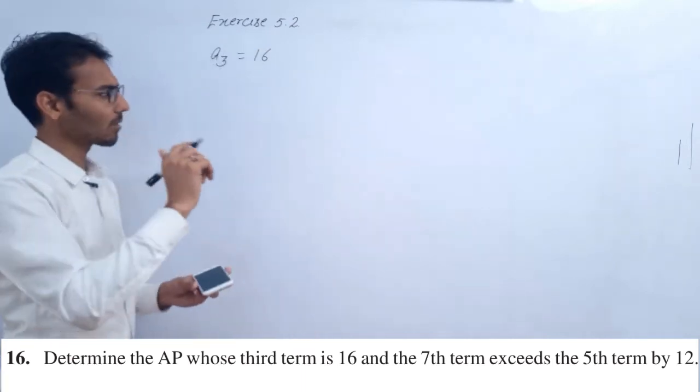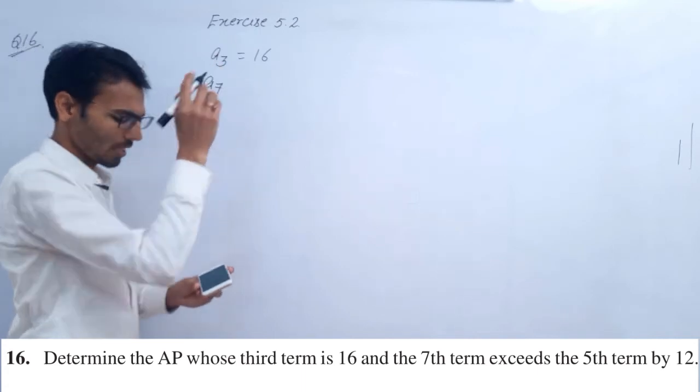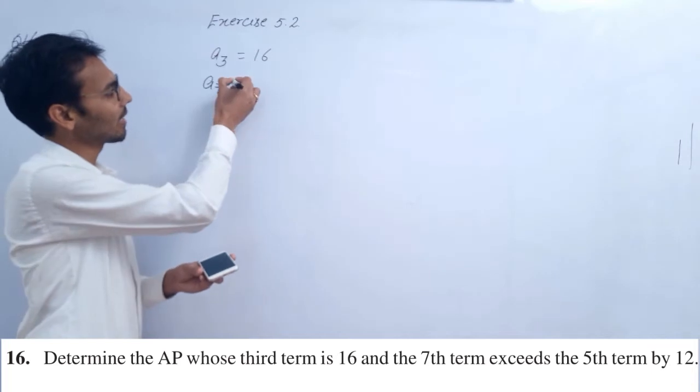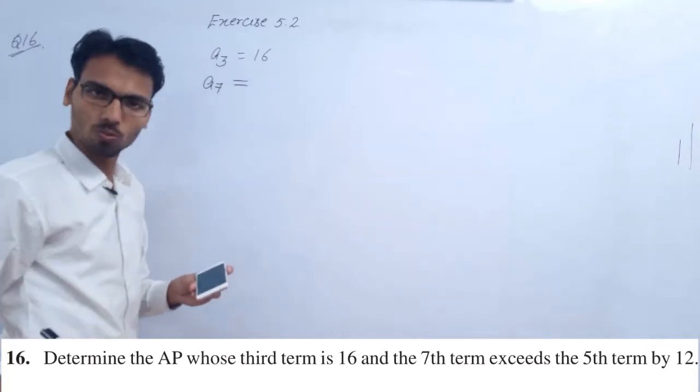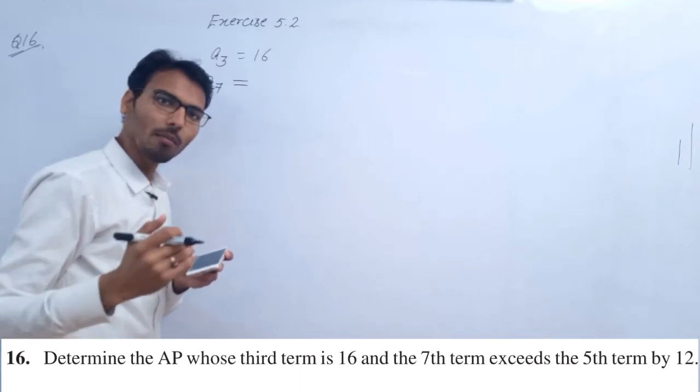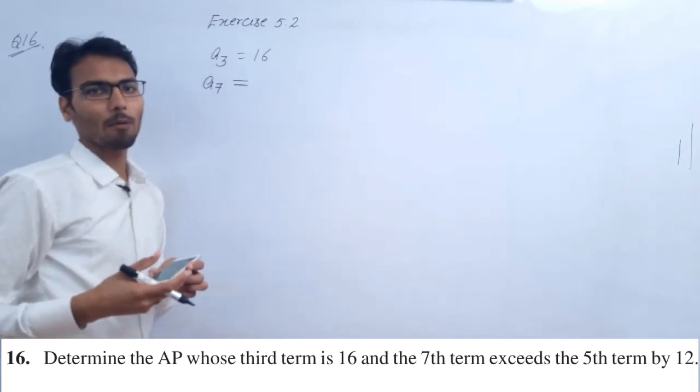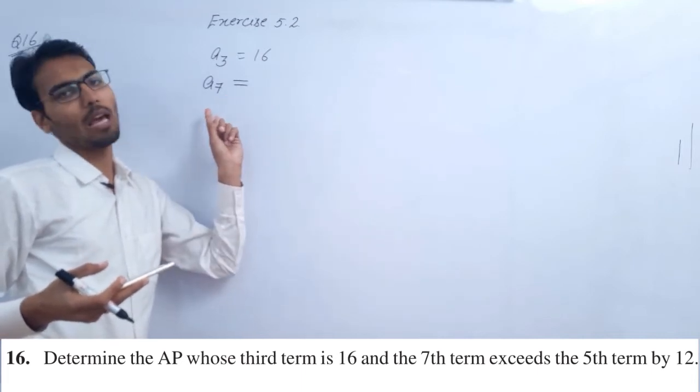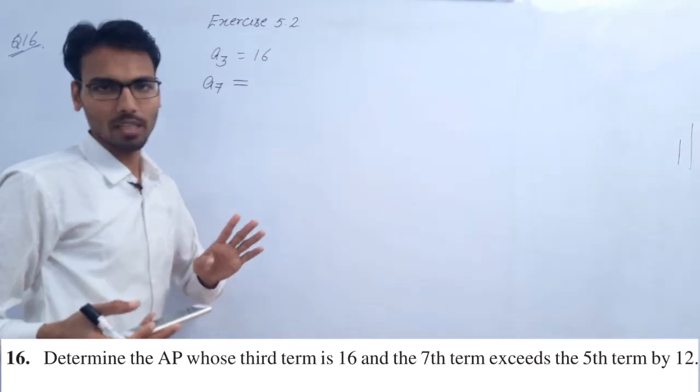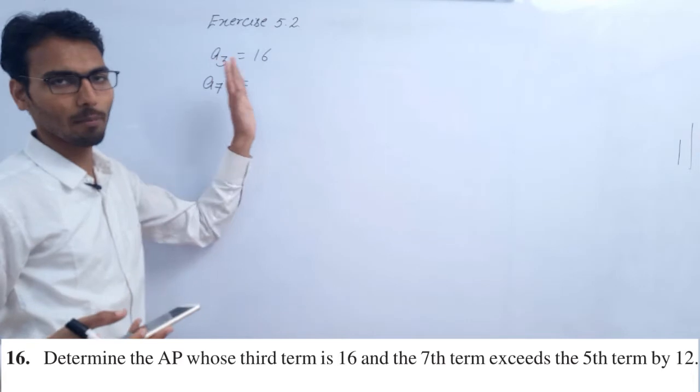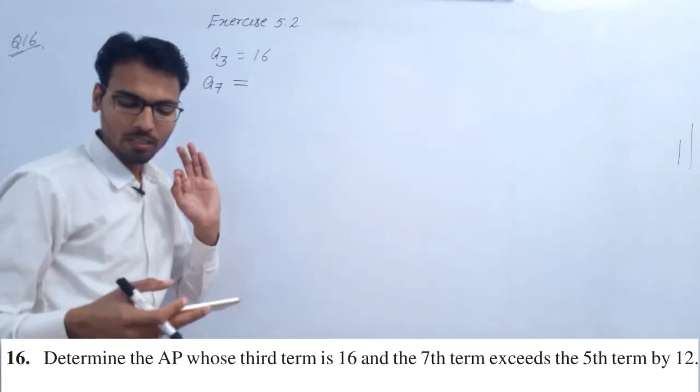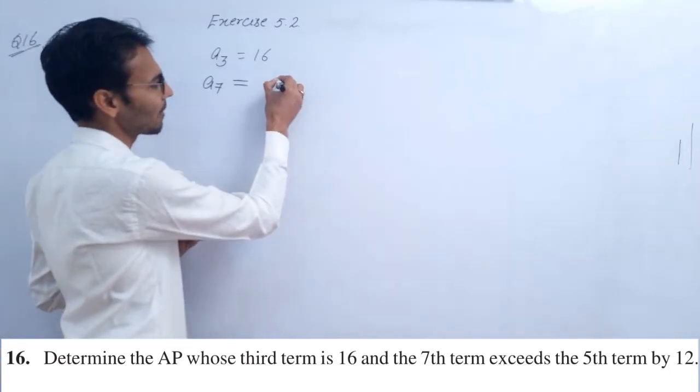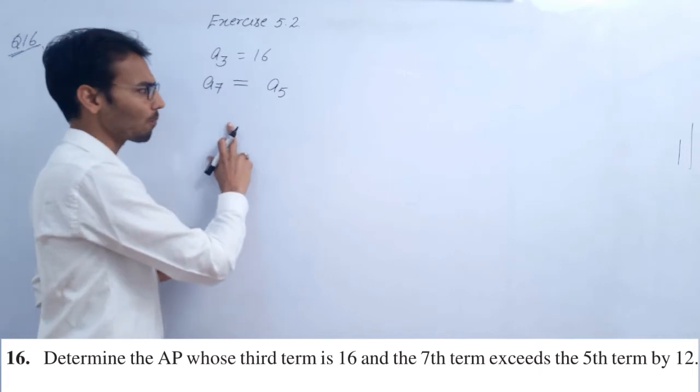And the seventh term, a₇, exceeds, which means more. The 7th term exceeds the 5th term by 12.